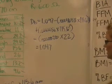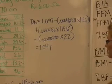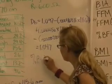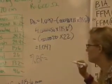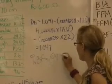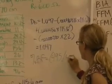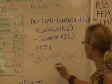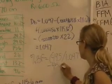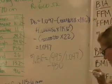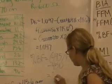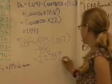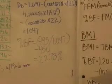And then to calculate percent body fat from the body density, we'll take 495 divided by 1.047, minus 450. And this equals 22.78 percent.